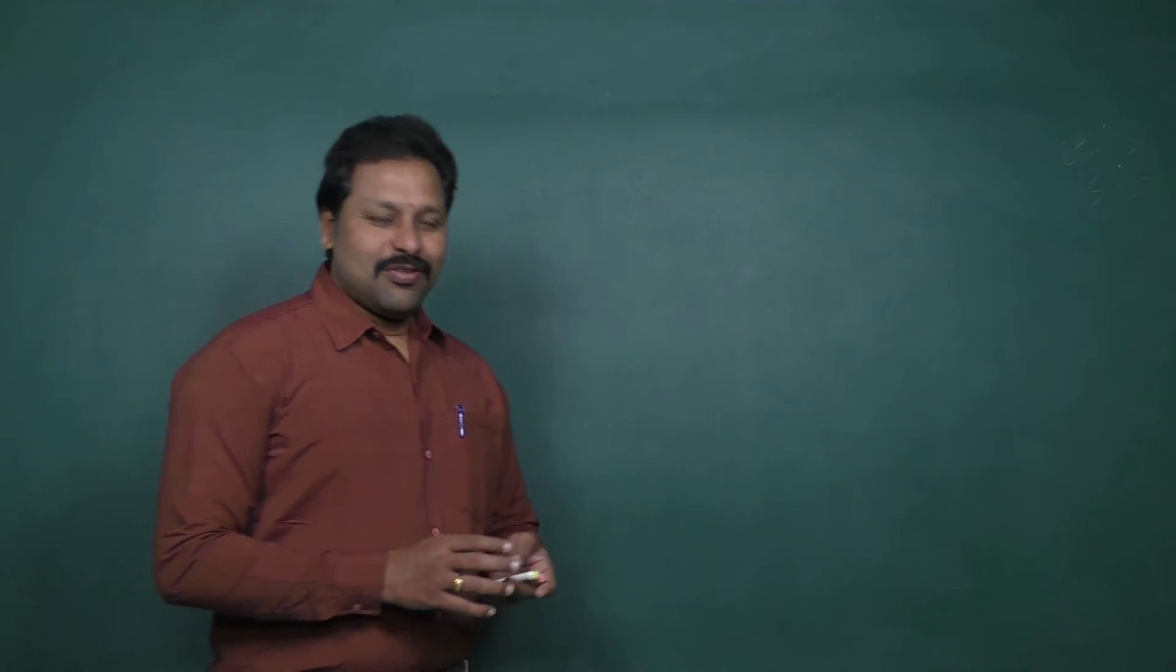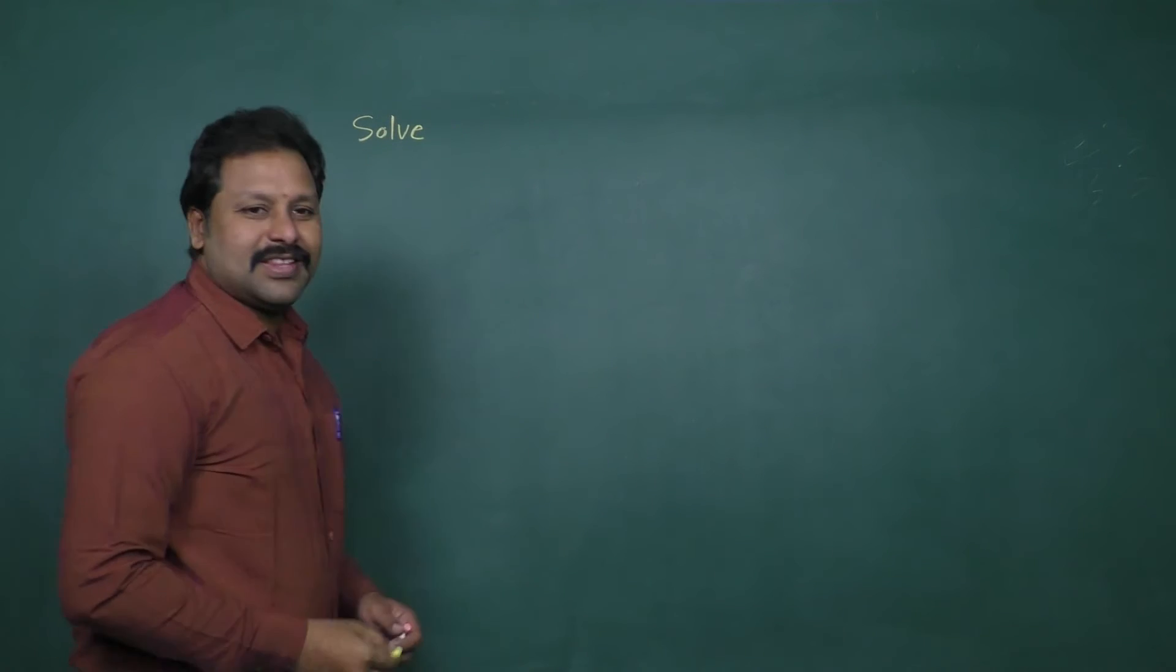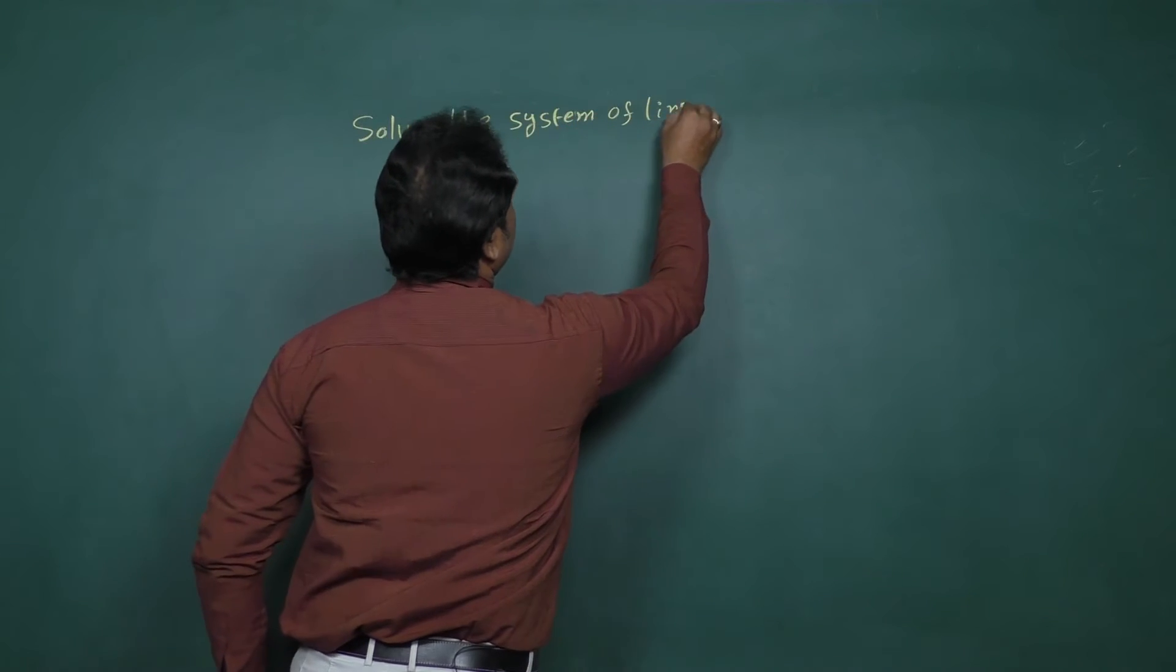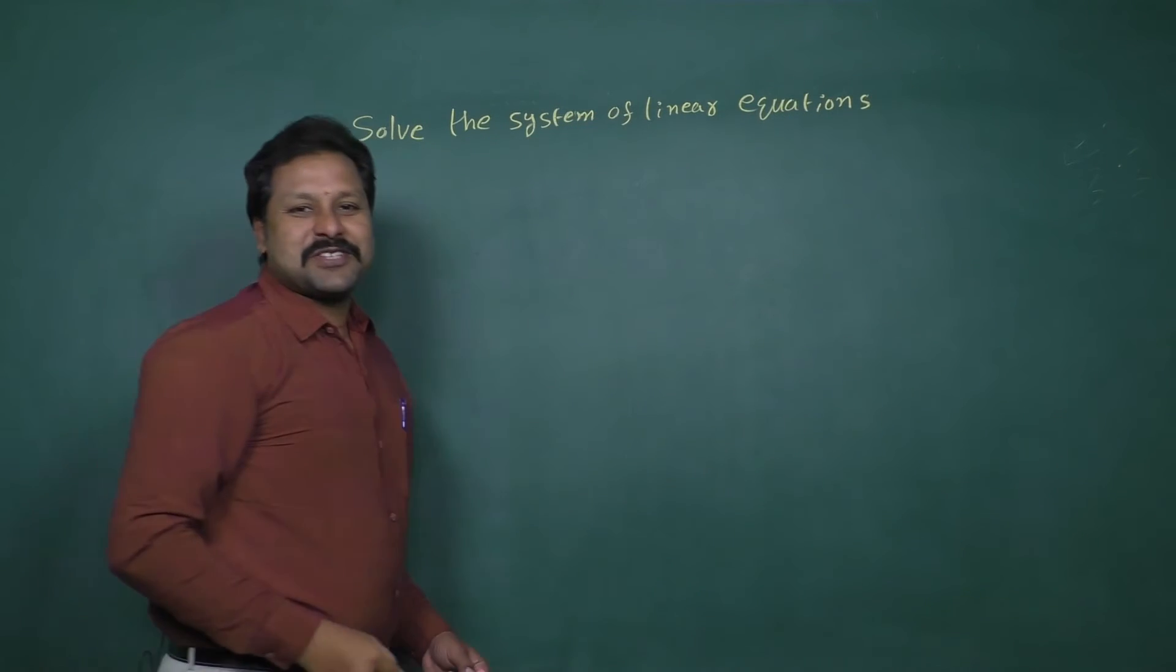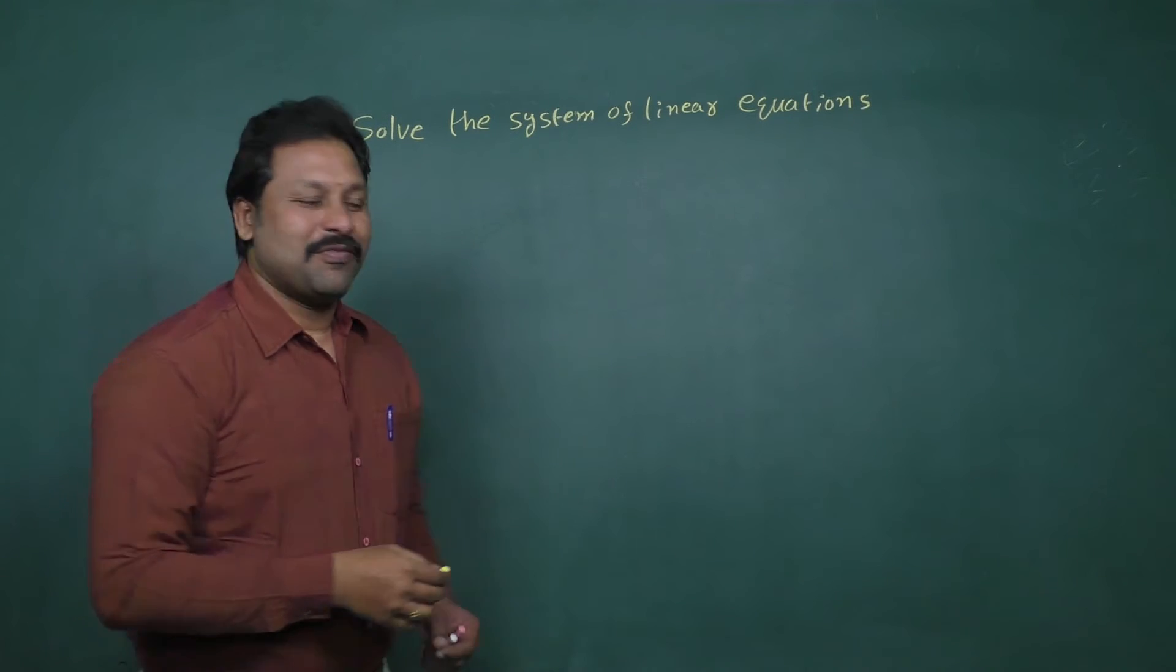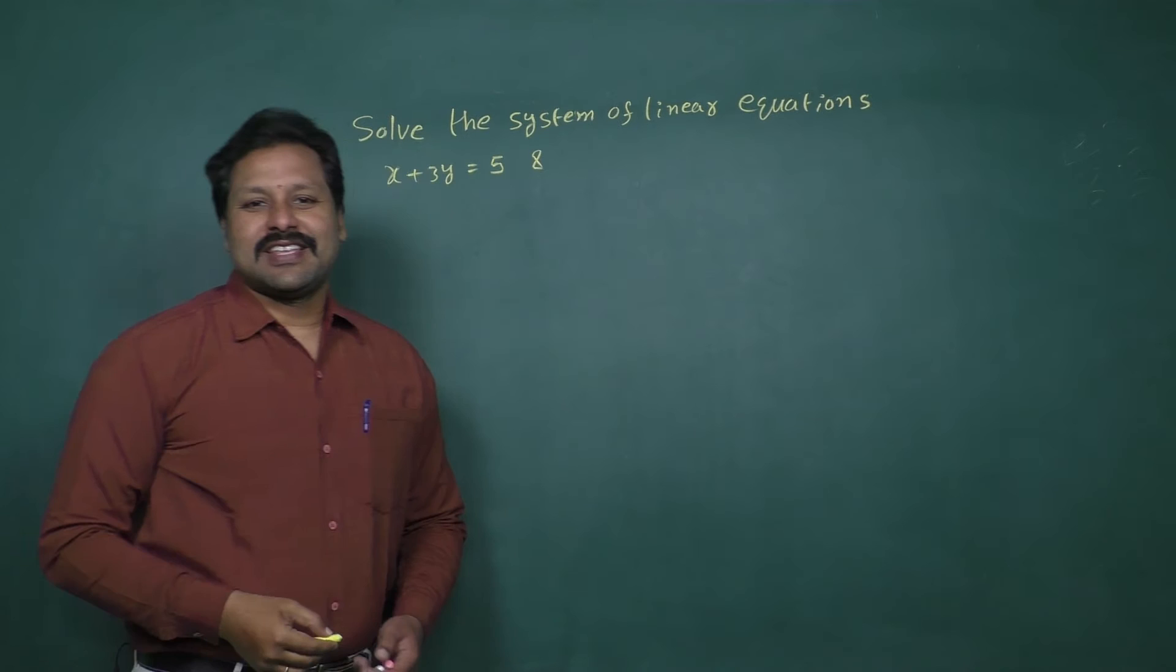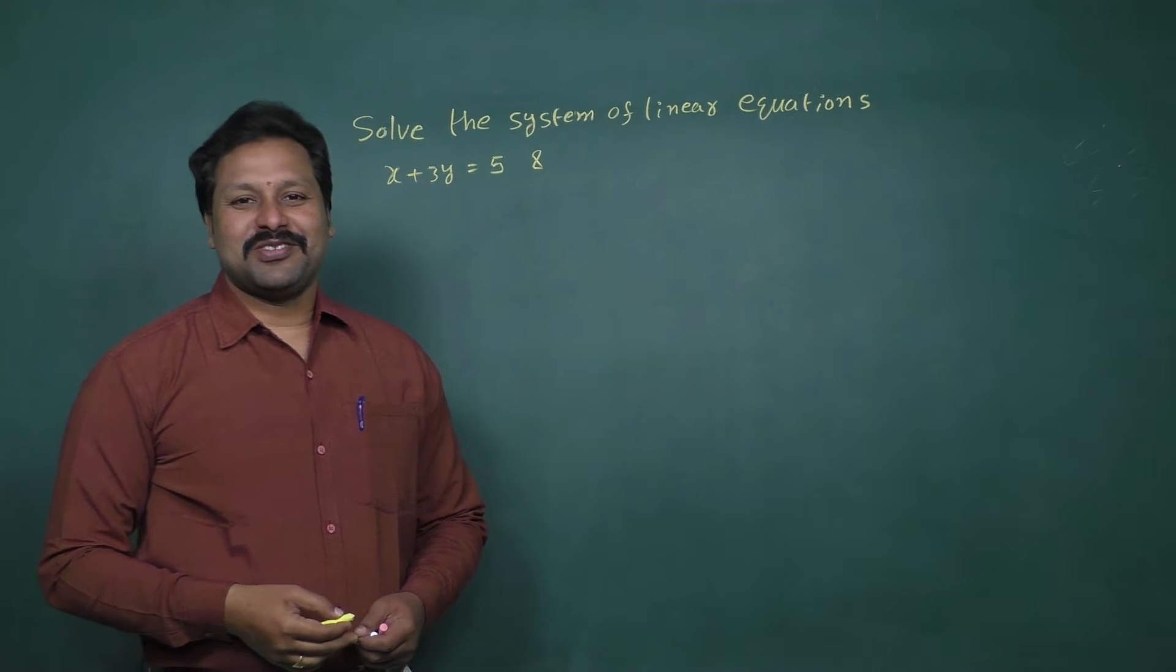Example: Solve the system of linear equations x plus 3y equal to 5 and 7x minus 8y equal to 6.